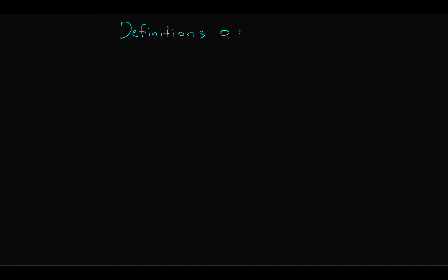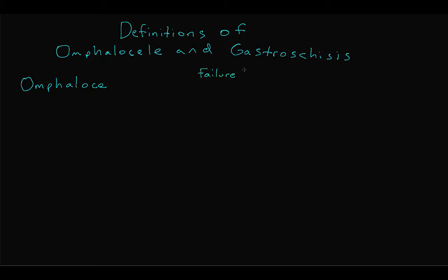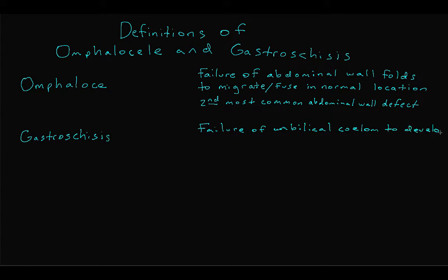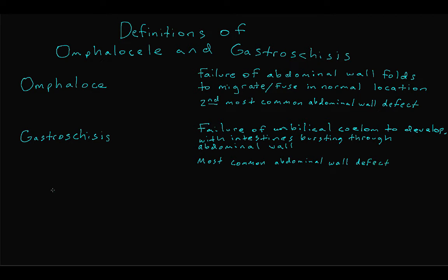Errors in normal embryologic development lead to congenital abdominal wall defects, which allows us to define omphalocele and gastroschisis. Omphalocele represents failure of the four abdominal wall folds to complete their migrations and fuse in the normal location; it is the second most common congenital abdominal wall defect. In gastroschisis, there is a failure of the umbilical coelom to develop, so the elongating intestine has no room to expand and bursts through the abdominal wall. As a result of these defects, the midgut never returned from the umbilical coelom to undergo normal rotation and fixation, so all children with these defects have non-rotation — which is different from malrotation and does not of itself predispose to small bowel obstruction.